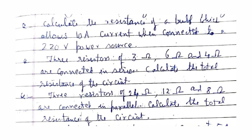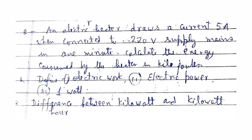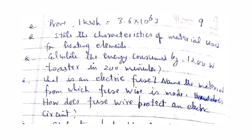Calculate the resistance of a bulb which allows 10 ampere current when connected to a 220 volt supply. Three resistors of 3 ohm, 6 ohm, and 4 ohm are connected in series — calculate the total resistance. Three resistors of 24 ohm, 12 ohm, and 8 ohm are connected in parallel — calculate the total resistance. An electric heater draws 5 ampere when connected to 220 volt supply — calculate the energy consumed by the heater in one minute in kilojoules. Define electric work, electric power, and one watt. Differentiate between kilowatt and kilowatt-hour. Prove that one kilowatt-hour equals 3.6×10⁶ joules. State the characteristics of material used for heating elements.